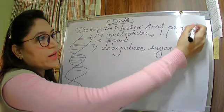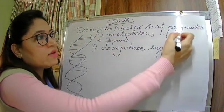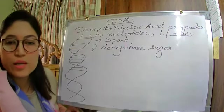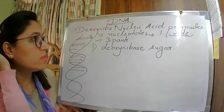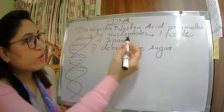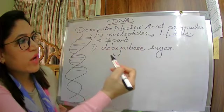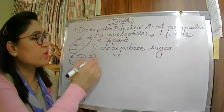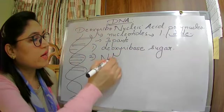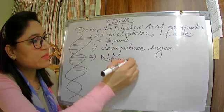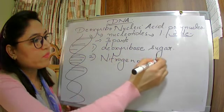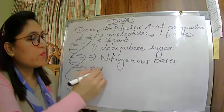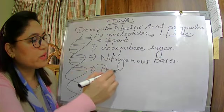Why polynucleotide? Because it contains so many nucleotides. One nucleotide contains three parts: deoxyribose sugar, nitrogenous bases, and the third part is a phosphate group.